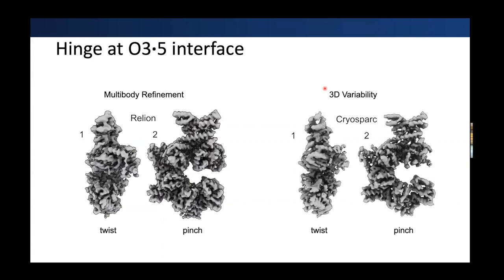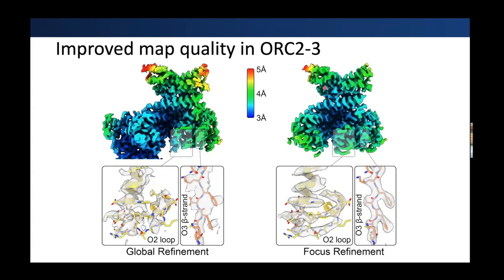This movement also allowed us to improve map quality on the edges, further validating where we put the masks. In a global refinement, the center of mass was on the ORC1, 4, and 5 subunits, so those aligned well. But because of the independent movement of ORC3 and ORC2, the edges were of low quality. After the focus refinement or multi-body refinement, these regions became much clearer and easier to model, giving us a more accurate structure.